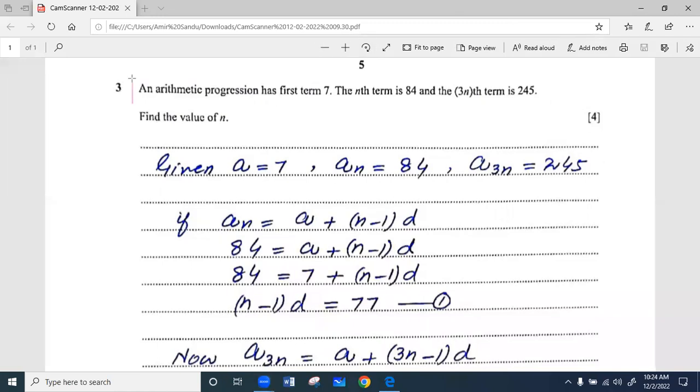an arithmetic progression has first term 7, nth term is 84, and 3nth term is 245. Find the value of n.